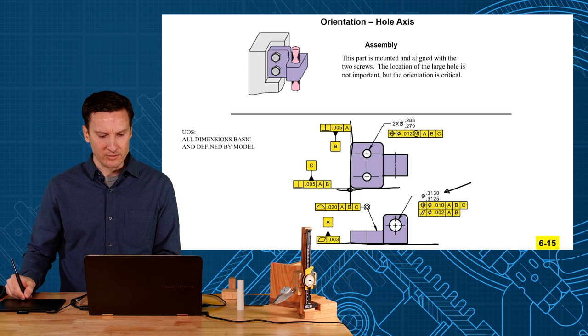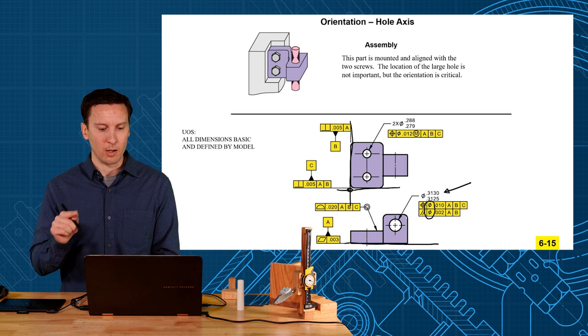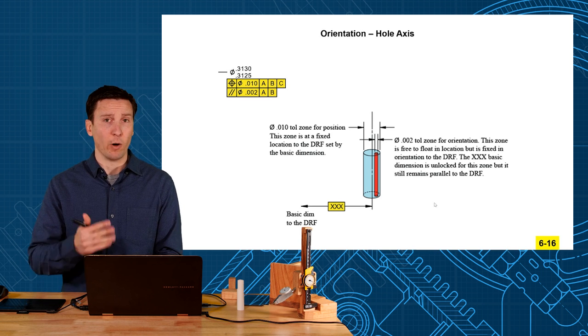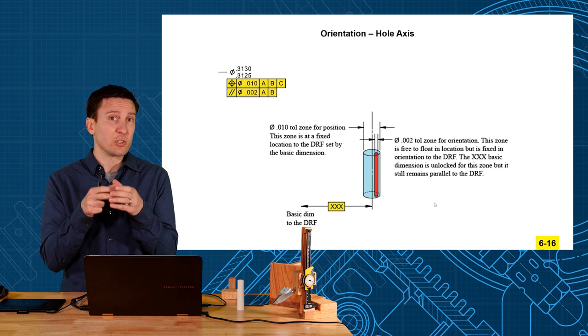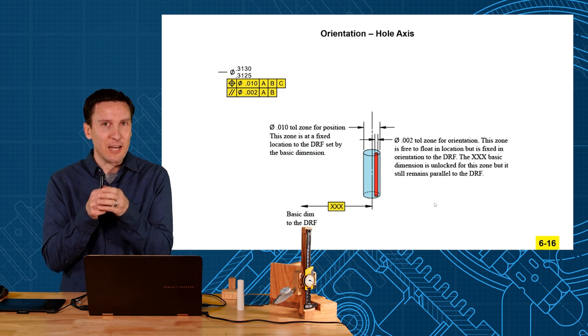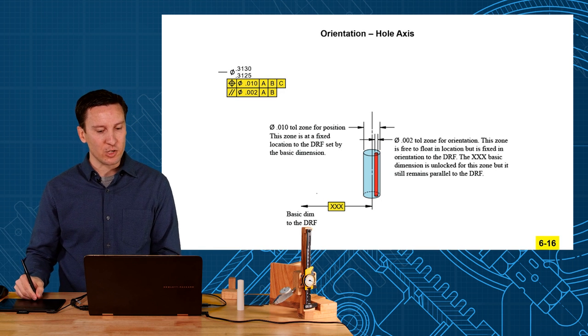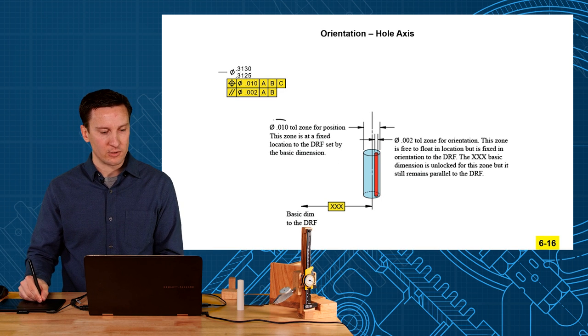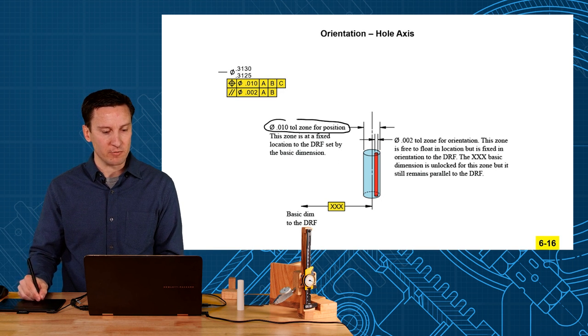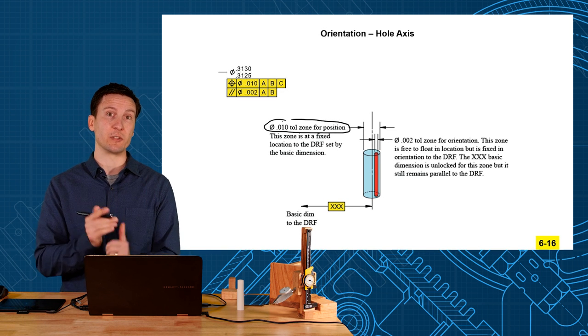So let's try to visualize these tolerant zones. When I say position diameter 10, parallel diameter 2, what does that mean? Well it's actually two tolerant zones, two cylindrical zones with a zone inside of a zone. So you have your position of 10 thou and that's just like a normal position tolerance. That's going to be fixed at the basic dimensions relative to the datums.